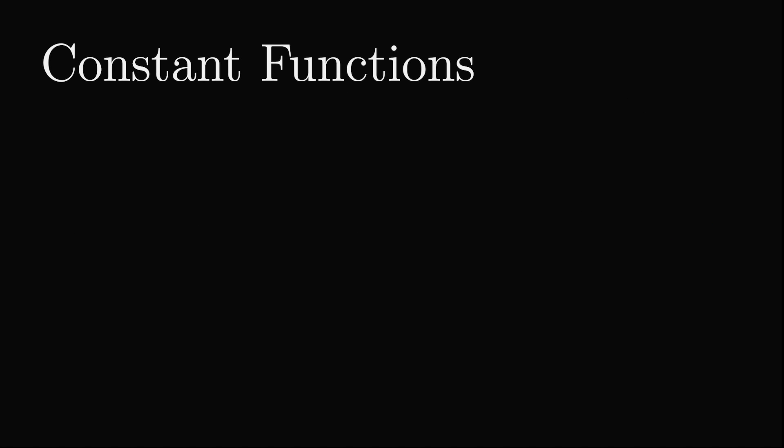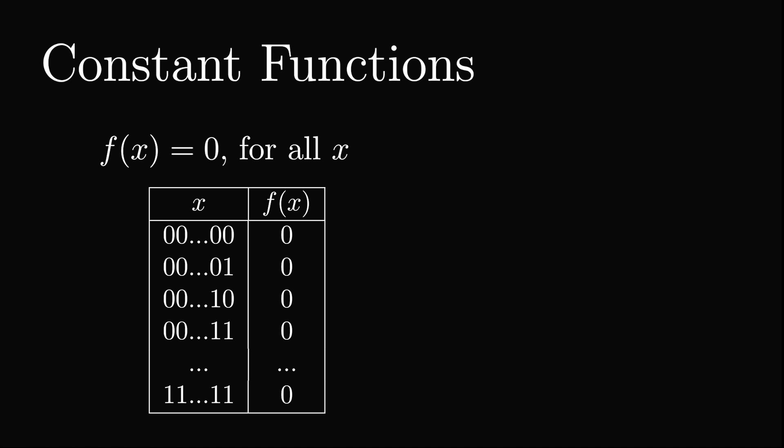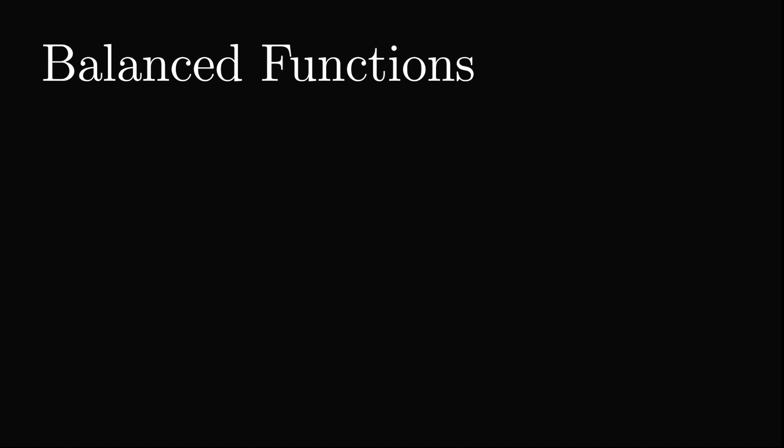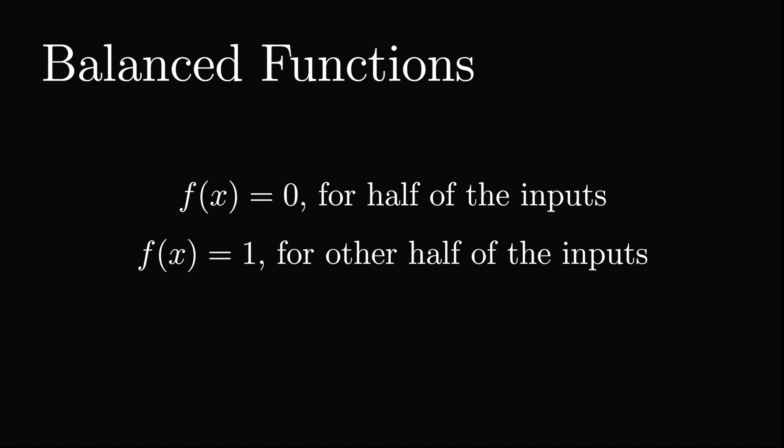If a function is constant, then for all inputs it returns the same output. That is, f of x equals 0 for all bitstrings of x, or f of x equals 1 for all bitstrings of x. Balanced functions, on the other hand, return 0 for half of the inputs and 1 for the other half of the inputs.